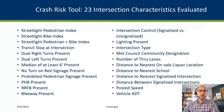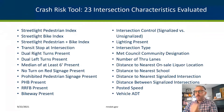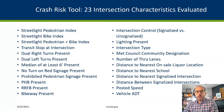This is a list of the intersection characteristics we wanted to evaluate for the crash risk analysis. We were somewhat limited by available data, but we were still able to evaluate 23 different characteristics. Some of those included the pedestrian index, the bike index, the ped and bike index, whether a transit stop was present, the intersection type, number of through lanes, and vehicle ADT.